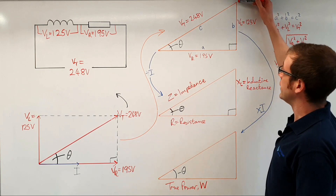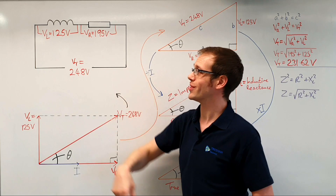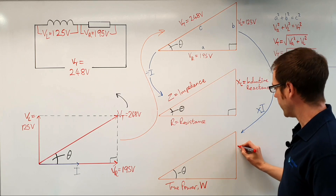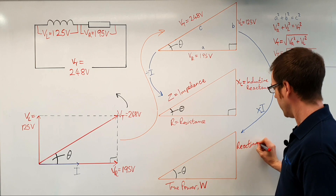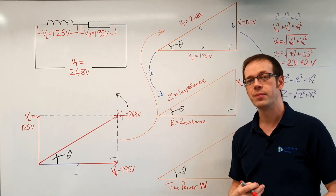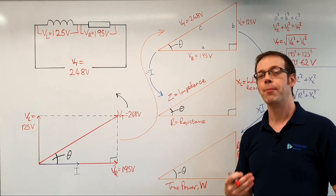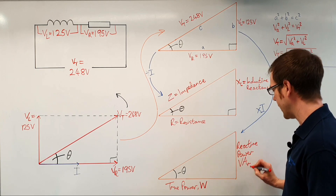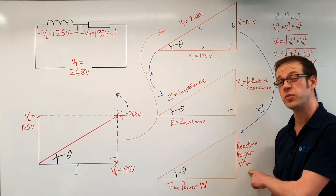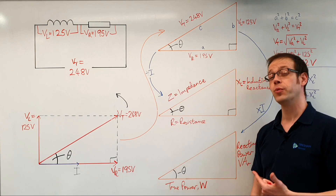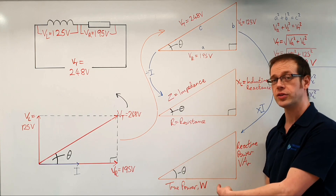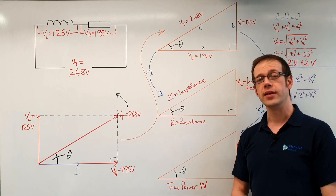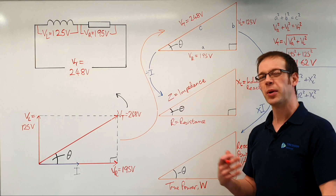Now if we take the voltage across the inductor — VL, the voltage across the inductive part of the circuit — and multiply that by the current flowing through that coil, we get something that we refer to as the reactive power. The reactive power is measured in what we call reactive volt-amperes, shortened to the unit symbol VAR — VA with a lowercase r in the subscript. These are sometimes referred to as VARs. Worth noting is that often these will be referred to as kilovars or KVARs, meaning it's been put into the kilo multiple — multiples of a thousand — but it means exactly the same thing.